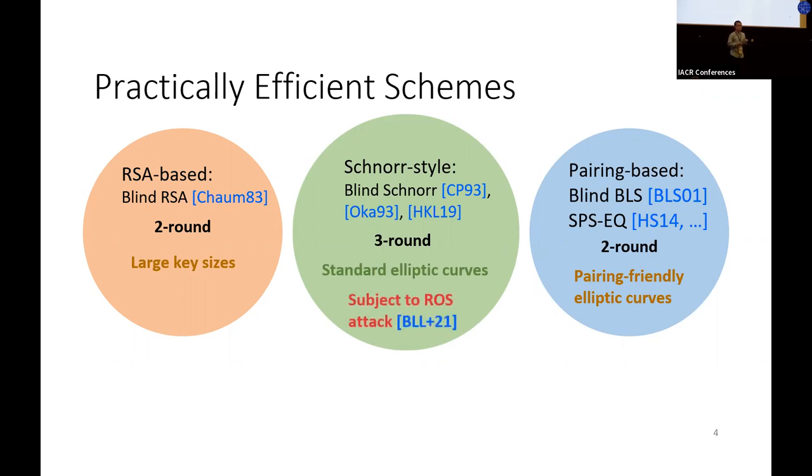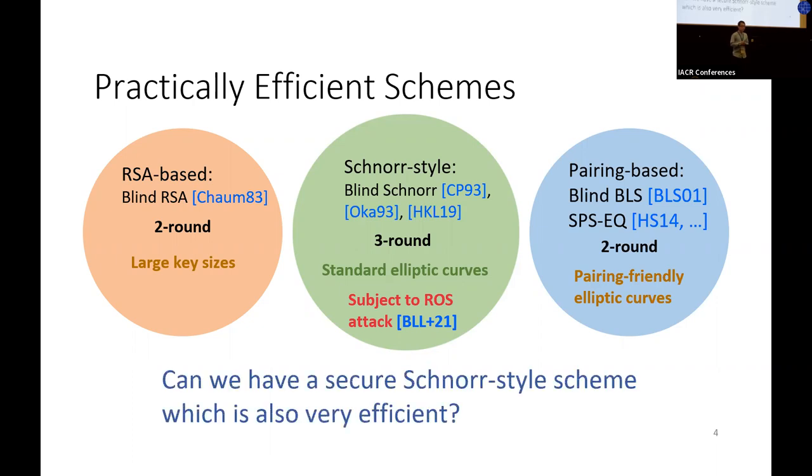However, very recently, Benhamouda et al. showed a polynomial time attack against the most efficient Schnorr-style scheme by solving the so-called ROS problem efficiently. Therefore, a big problem we address in this paper is: can we have a secure Schnorr-style scheme which is also very efficient?